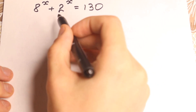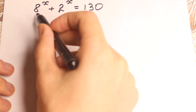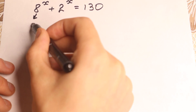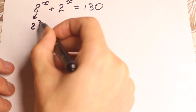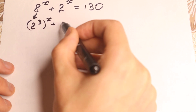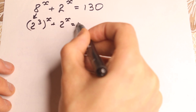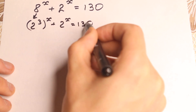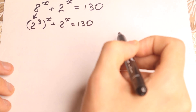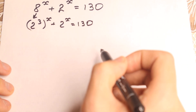First of all, 2 and 8 have different bases on the left side, but if we write 8 as 2 cubed, so 2 cubed to the power x plus 2 to the x equal to 130. The first step is to write 8 as 2 cubed. I hope everyone understands this step.